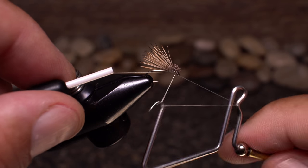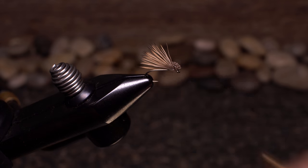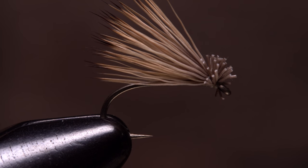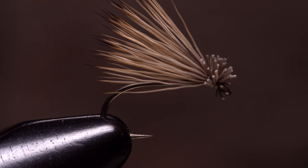Do a 4 or 5 turn whip finish, seat the knot well, and snip or cut your tying thread free. You should end up with a good looking wing and a nicely shaped head on the fly.